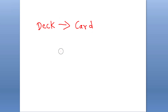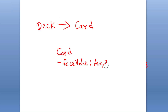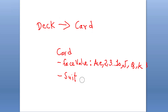A card has two properties that define it. One is face value — the face value can be from two, three, up to the numeric ten, and we have J, Q, and K. The other property that defines a card as a unique one is suit. There are four types of suits: spade, heart, club, and diamond. A card is defined by its face value and suit value.